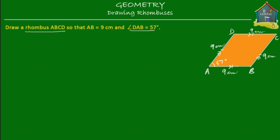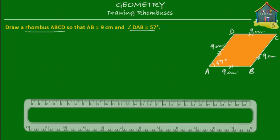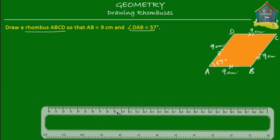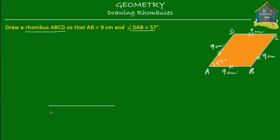With all this information, let's draw our rhombus. We take a ruler and start with line AB. Let's place the ruler here and draw a side of 9 cm, from 0 through 9. So here is a side of 9 cm — label it AB and write down 9 cm.